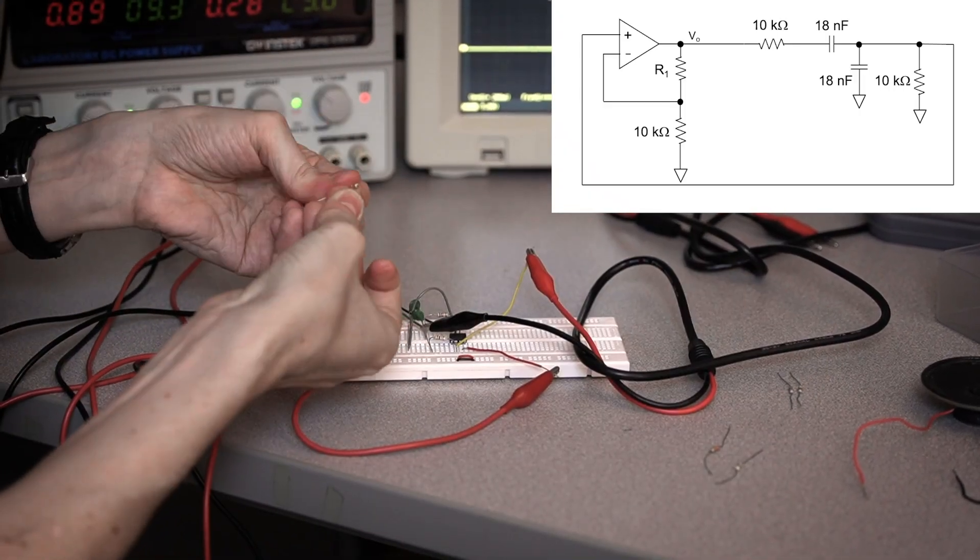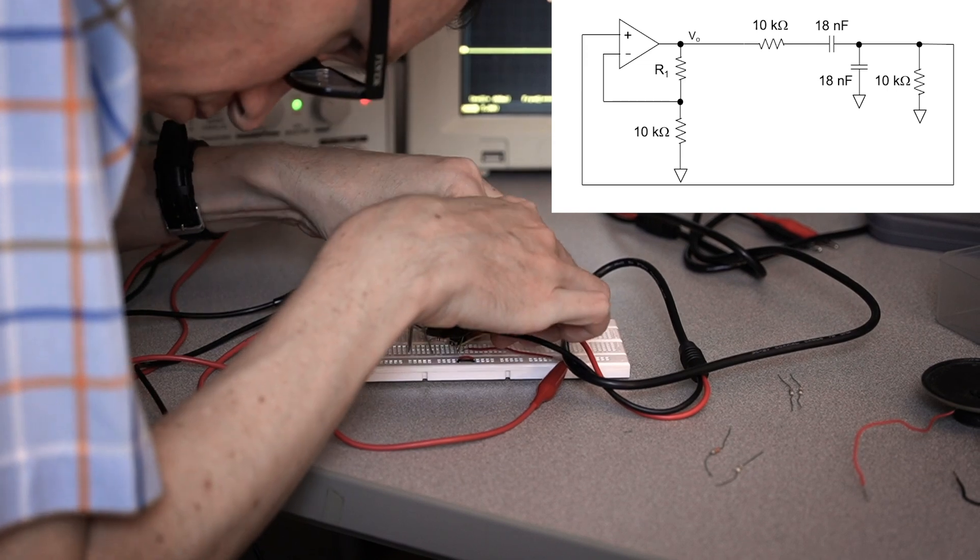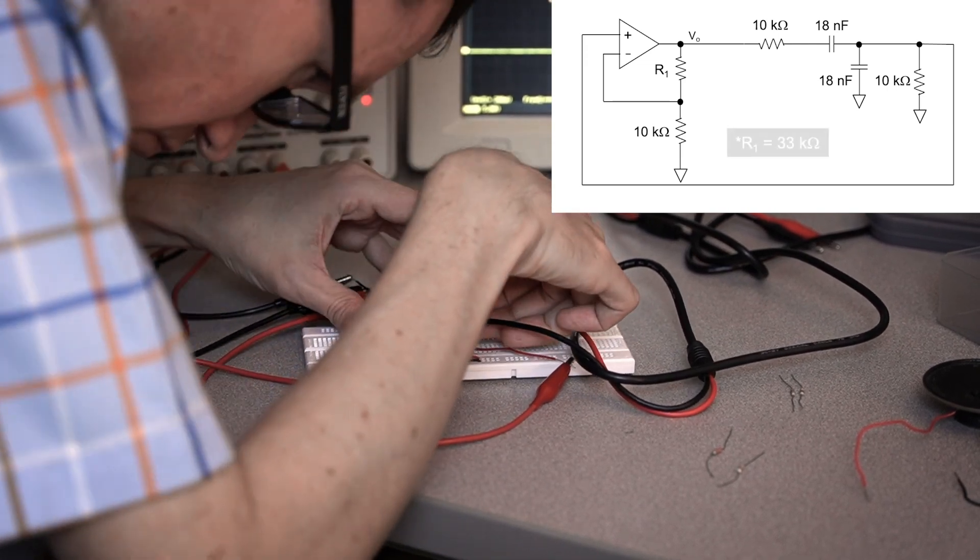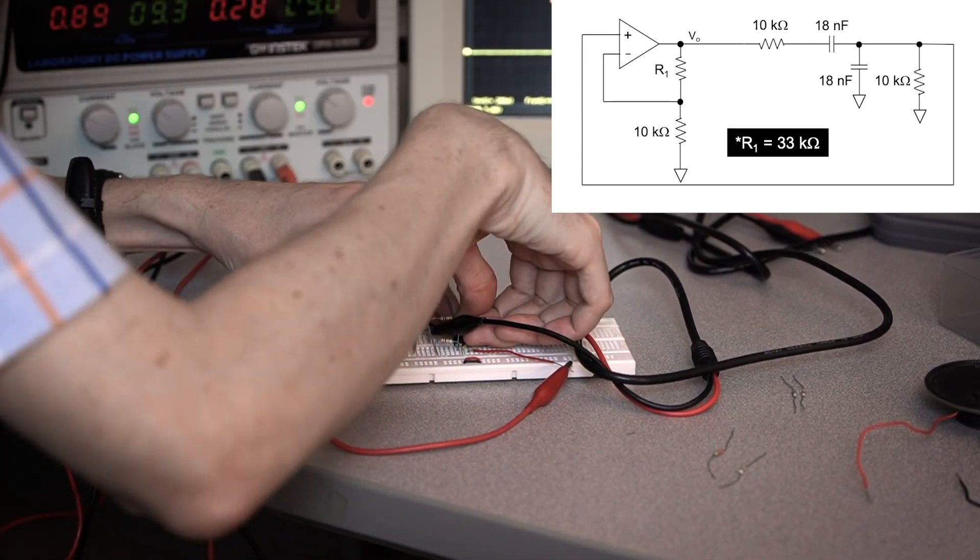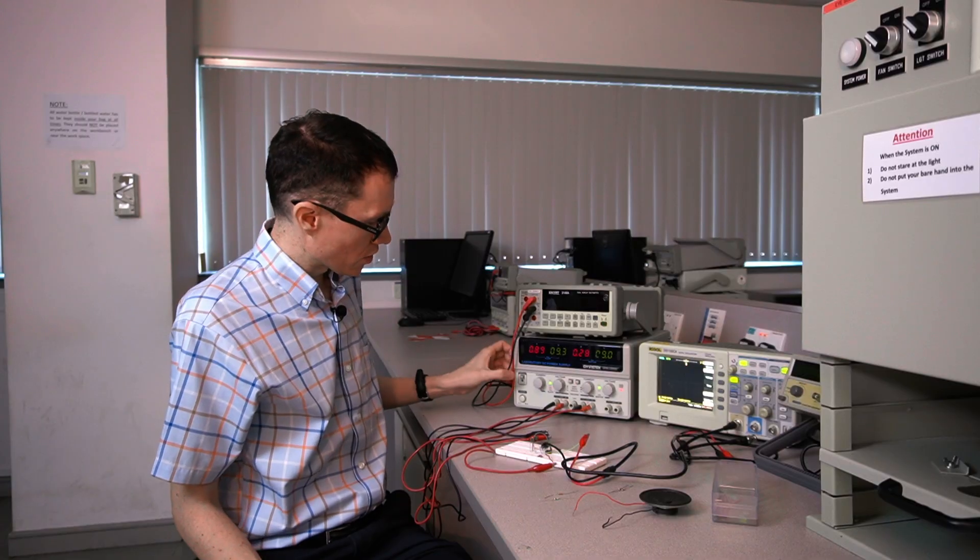Our signal now looks very much like a square wave, and the reason for that is because the amplifier is completely saturated. This is probably too much gain through the amplifier. Let's lower the gain back to something more reasonable. So I've just inserted a 33 kiloohm resistor for R1.